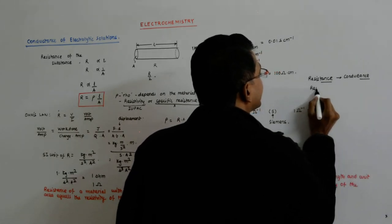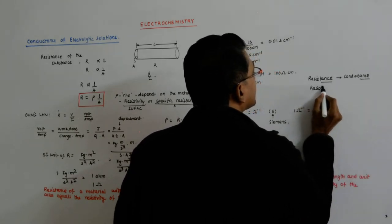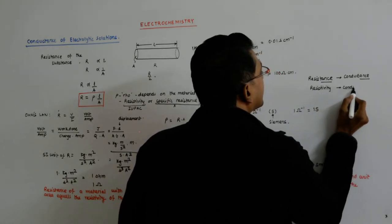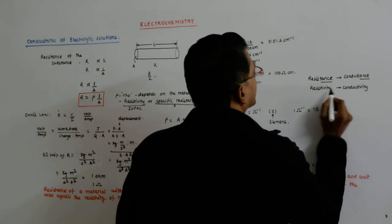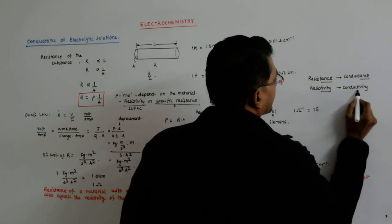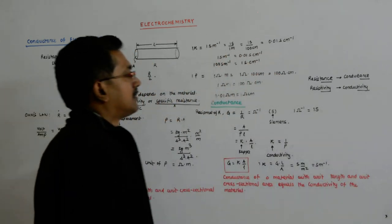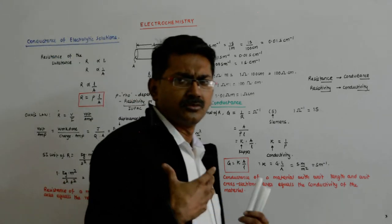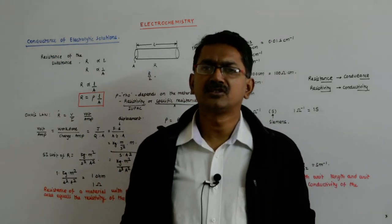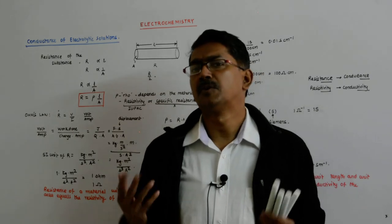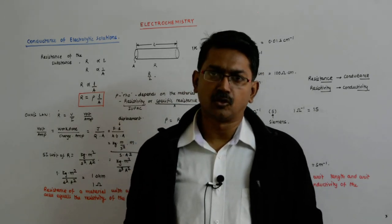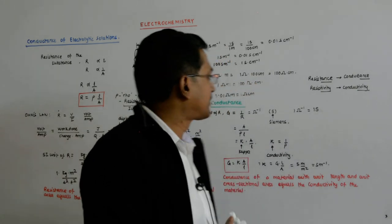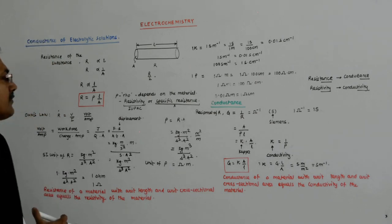And if it is resistivity, then it is conductivity. So don't get confused. 1 upon rho is kappa. 1 upon R is g. R has got its unit as ohm. So g has its unit as Siemens.